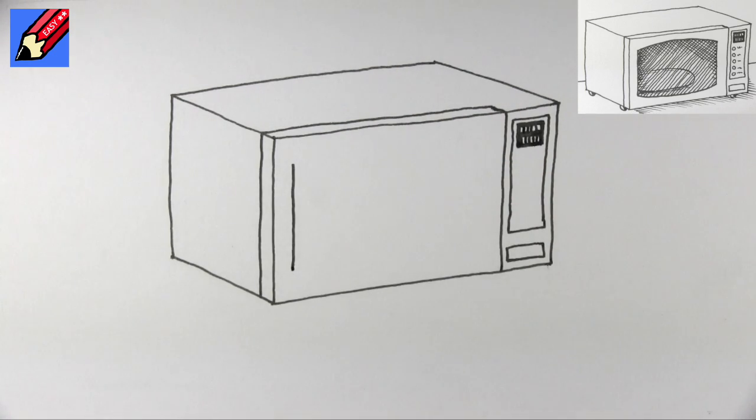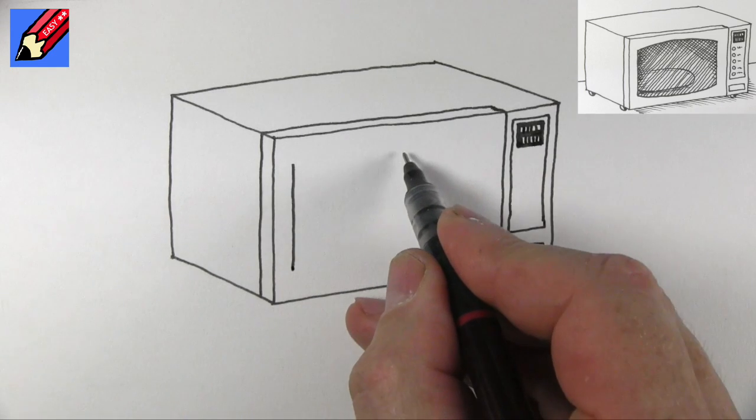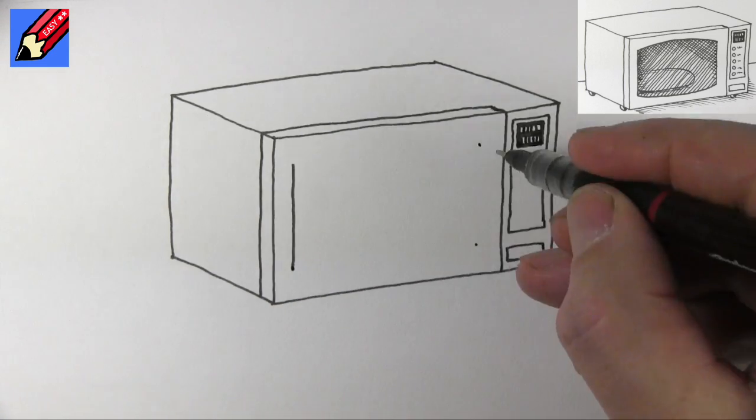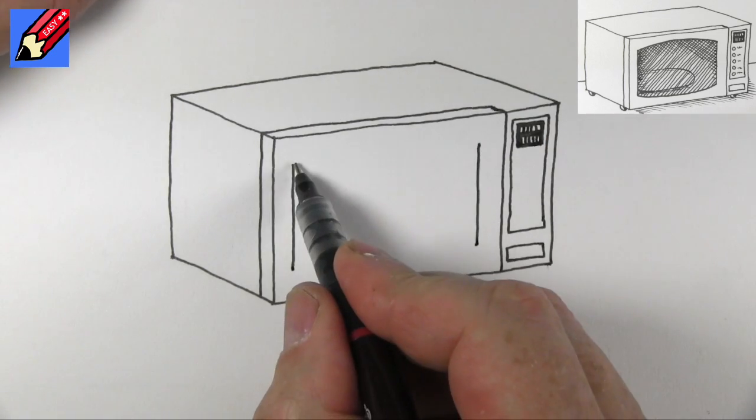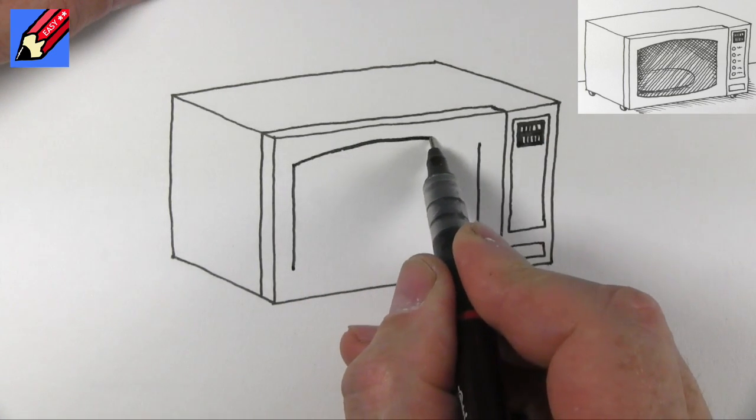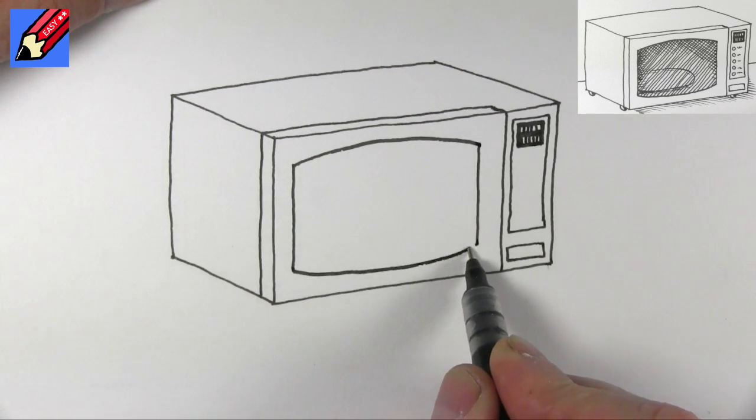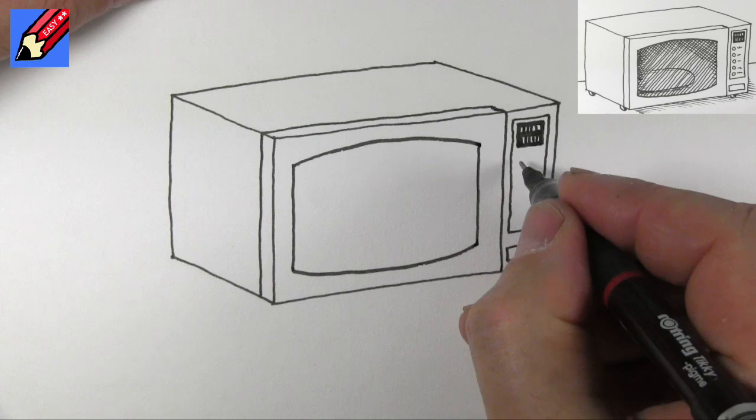This is going to be the window in the door. That wants to come across to about there. I'm going to bring the window down. What I'm going to do is curve it slightly on the top and curve it slightly on the bottom.